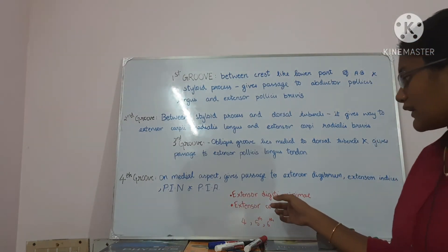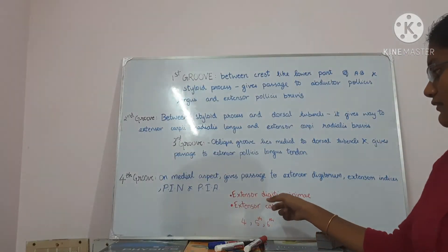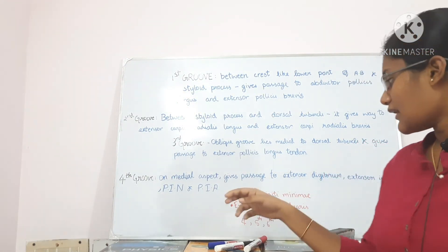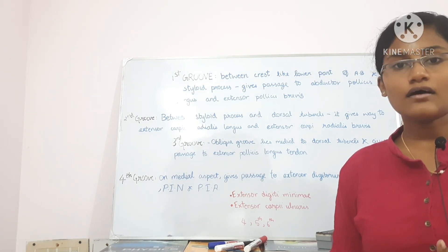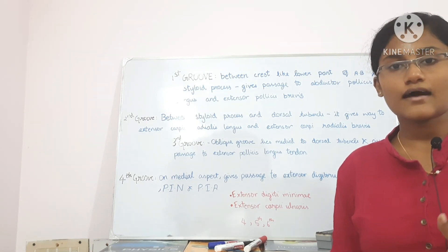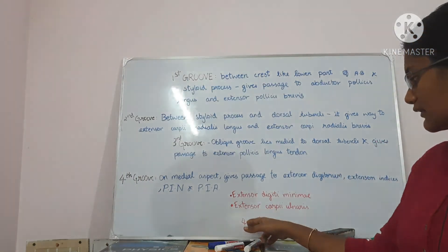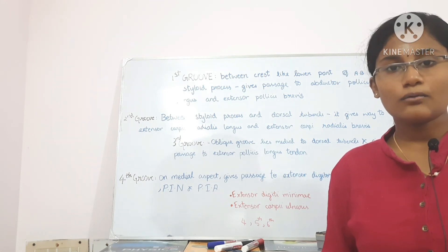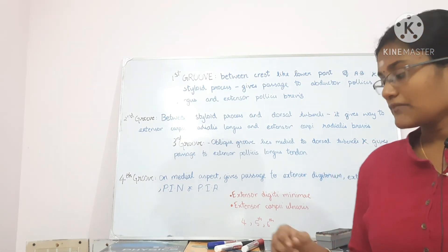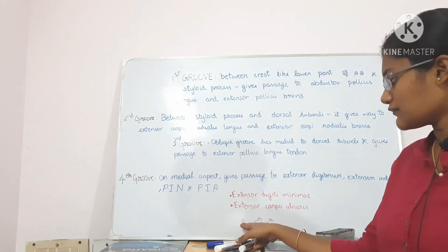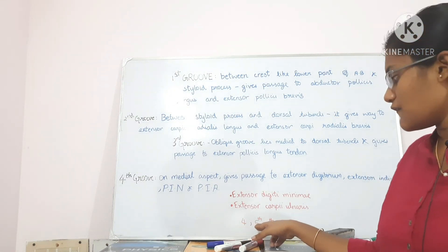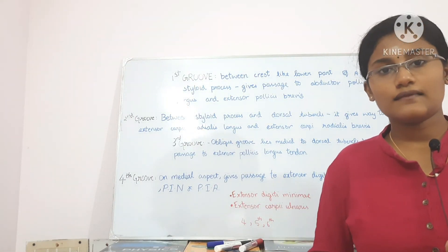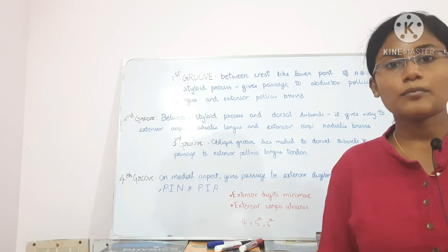Additionally, the extensor digiti minimi passes through the radioulnar joint on the inferior end, and the extensor carpi ulnaris passes between the head and the styloid process of the ulna. The extensor retinaculum on the lower end is divided into six compartments: the first four are related to the radius, the fifth is related to the inferior radioulnar joint, and the sixth is present between the head and the styloid process of the ulna.